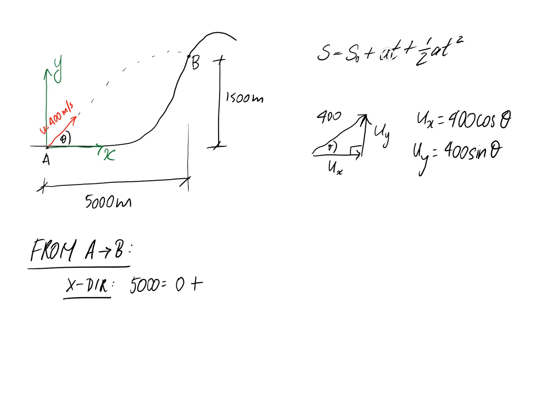U in the X direction is what we just calculated: 400 cos theta. T is the time it takes to do that flight—we don't actually know. And we have a half times the acceleration in the X direction, which I'm going to assume equals zero, meaning we're neglecting air resistance.